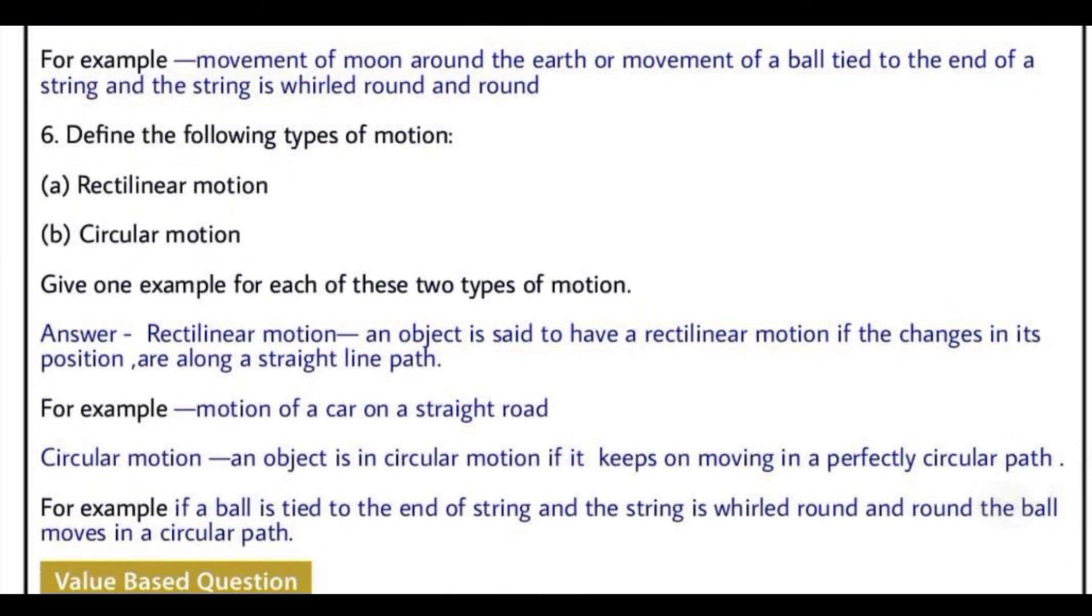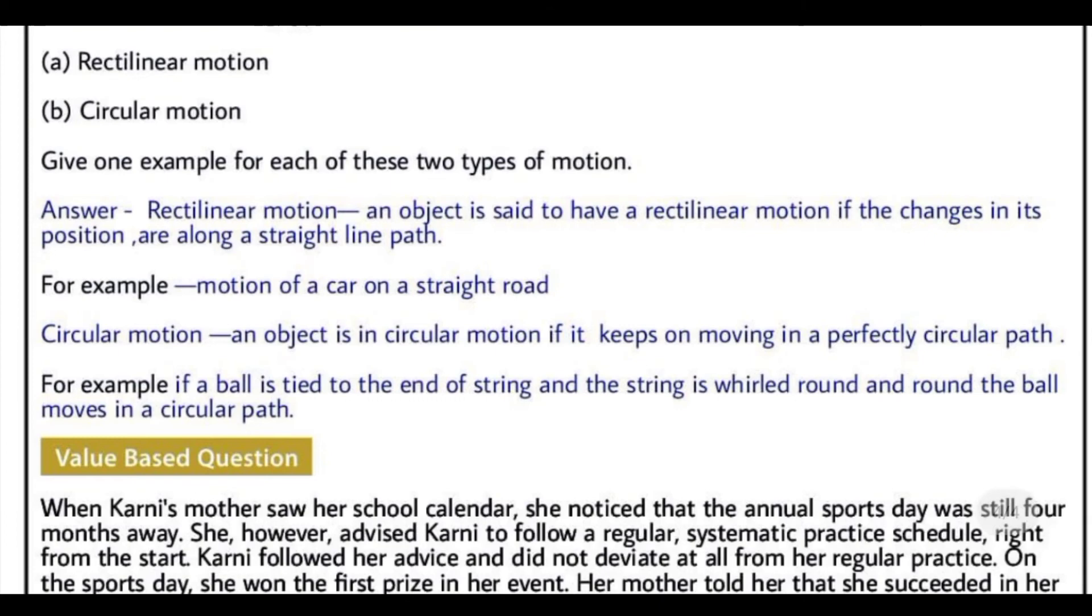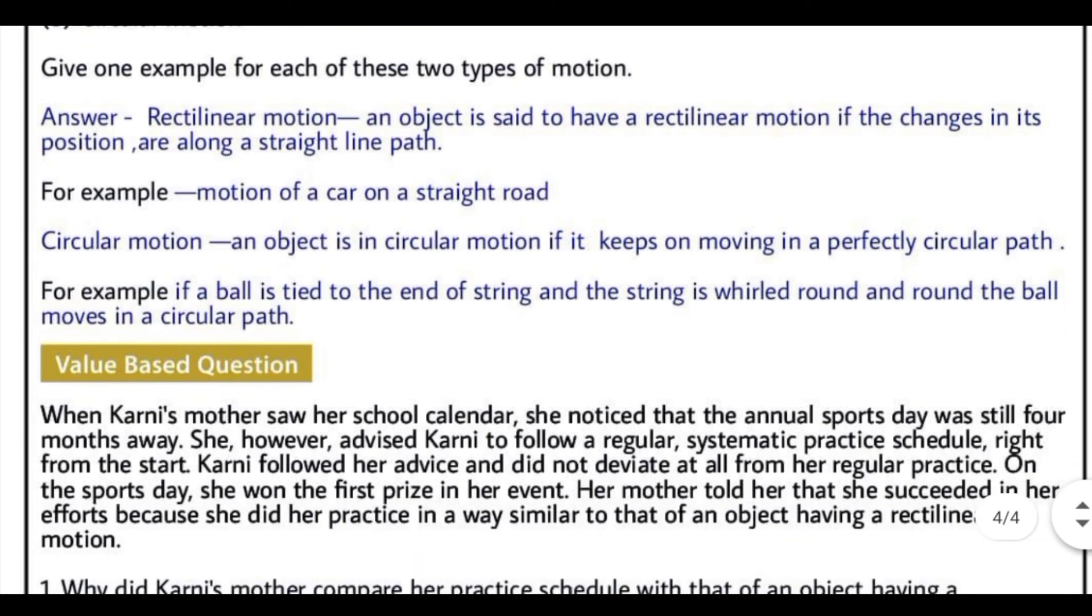Define the following types of motion: rectilinear motion and circular motion. Rectilinear motion is, an object is said to have a rectilinear motion if it changes its position along a straight line path, for example, motion of a car on a straight road. And circular motion: an object is in circular motion if it keeps on moving in a perfectly circular path, and the example is a ball tied to the end of string, and the string is whirled round and round, the ball moves in a circular path.